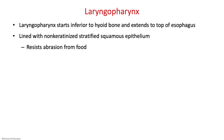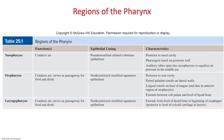The laryngopharynx starts right below your hyoid bone and extends to the top of your esophagus. This is the part of the throat that is right behind your larynx.